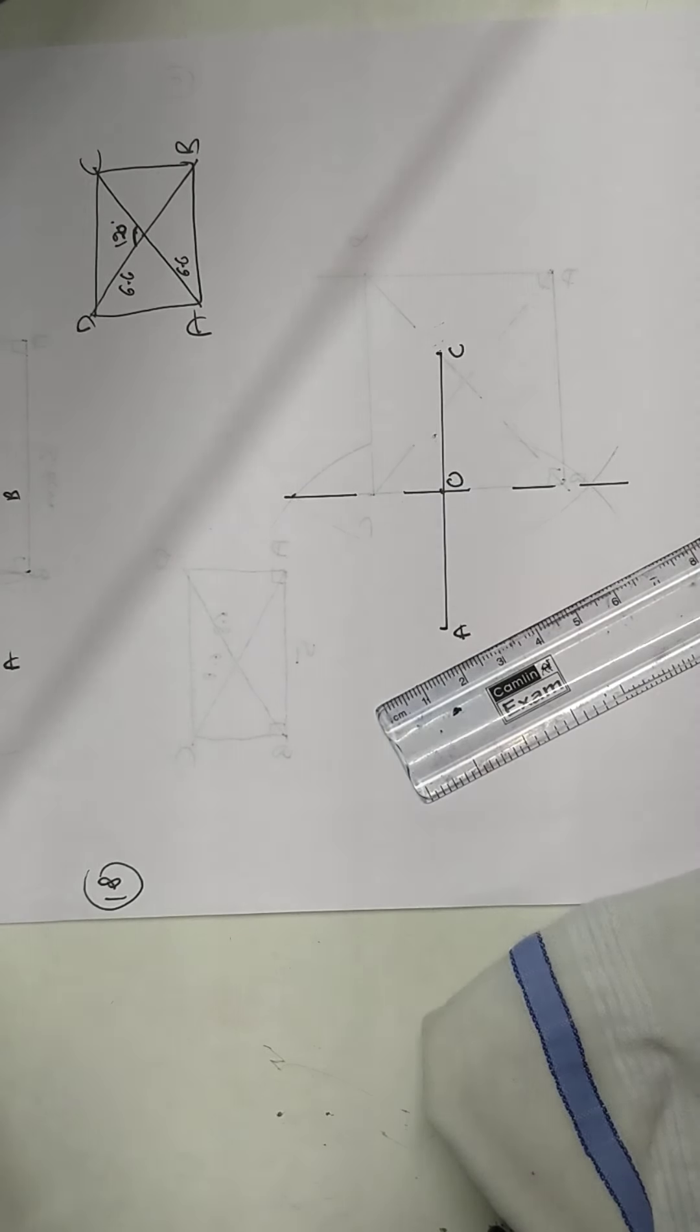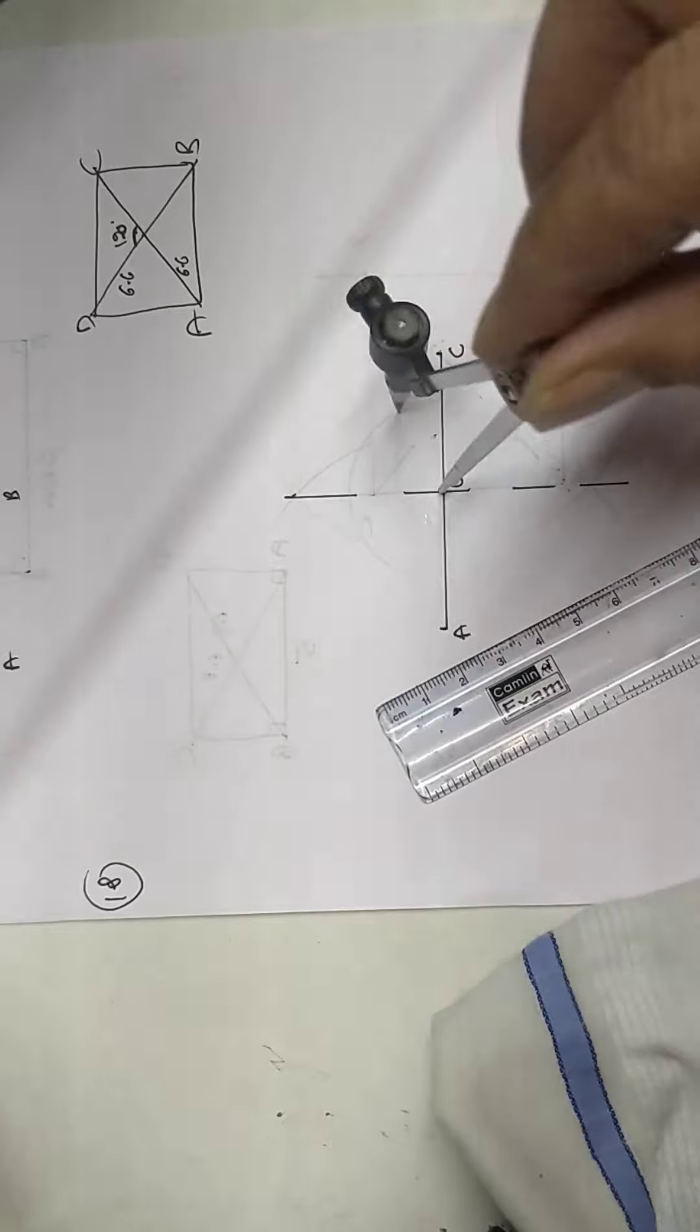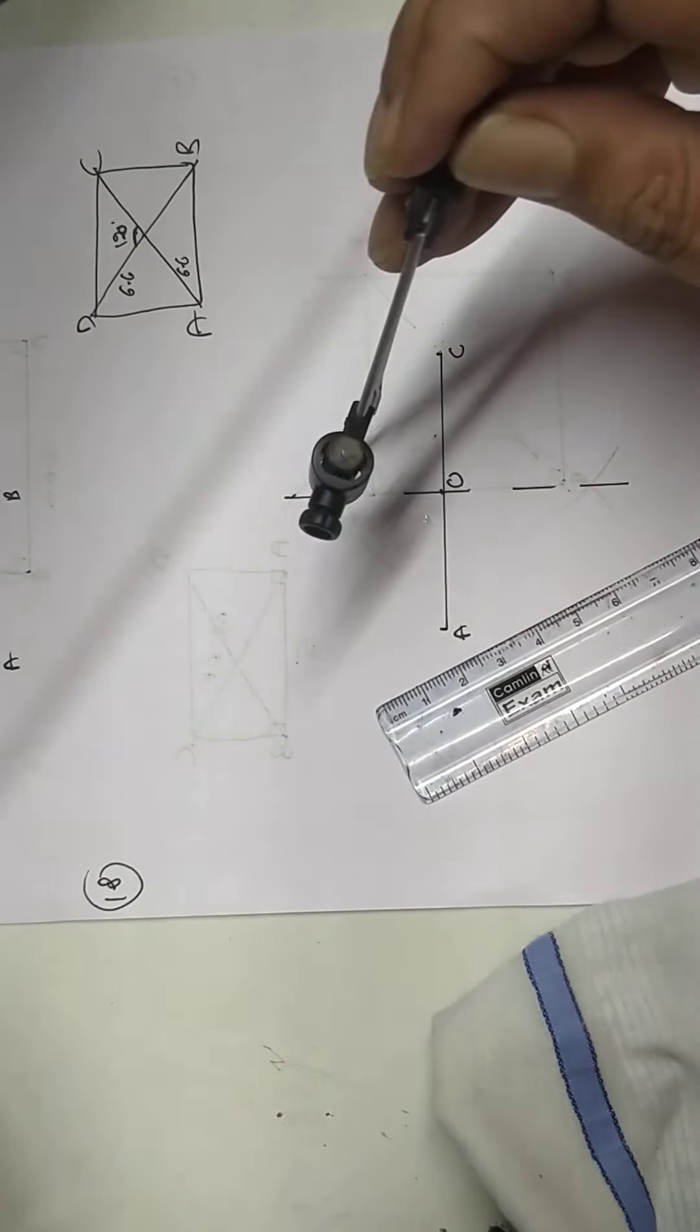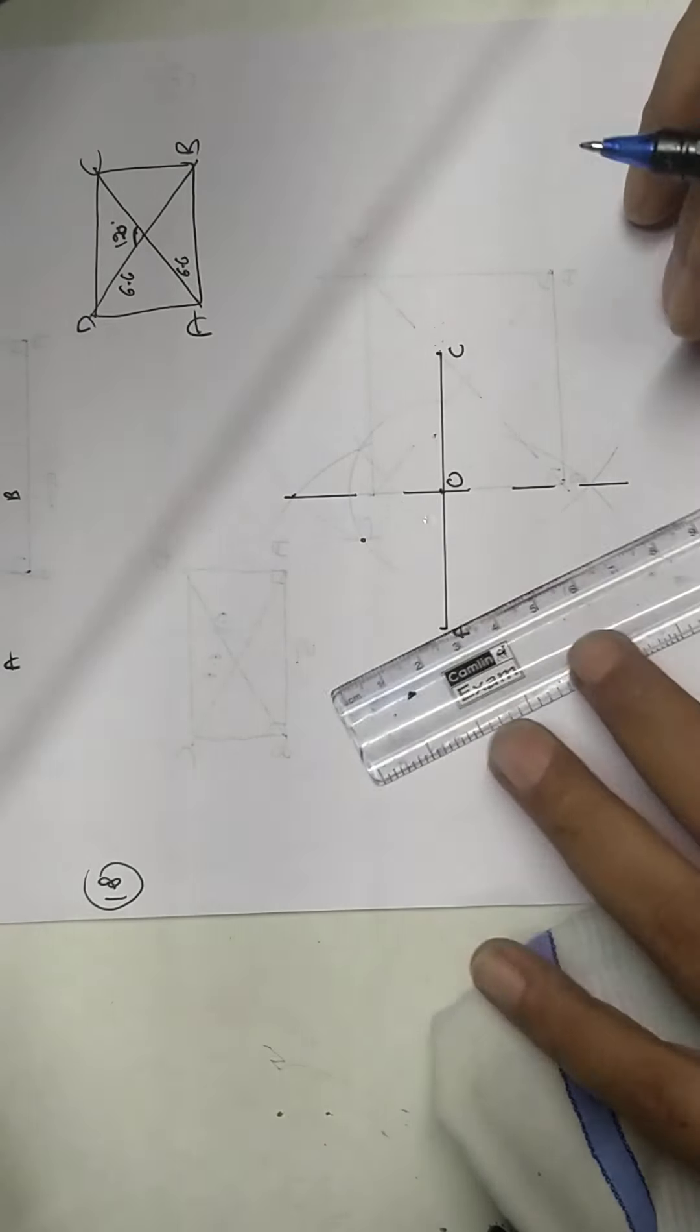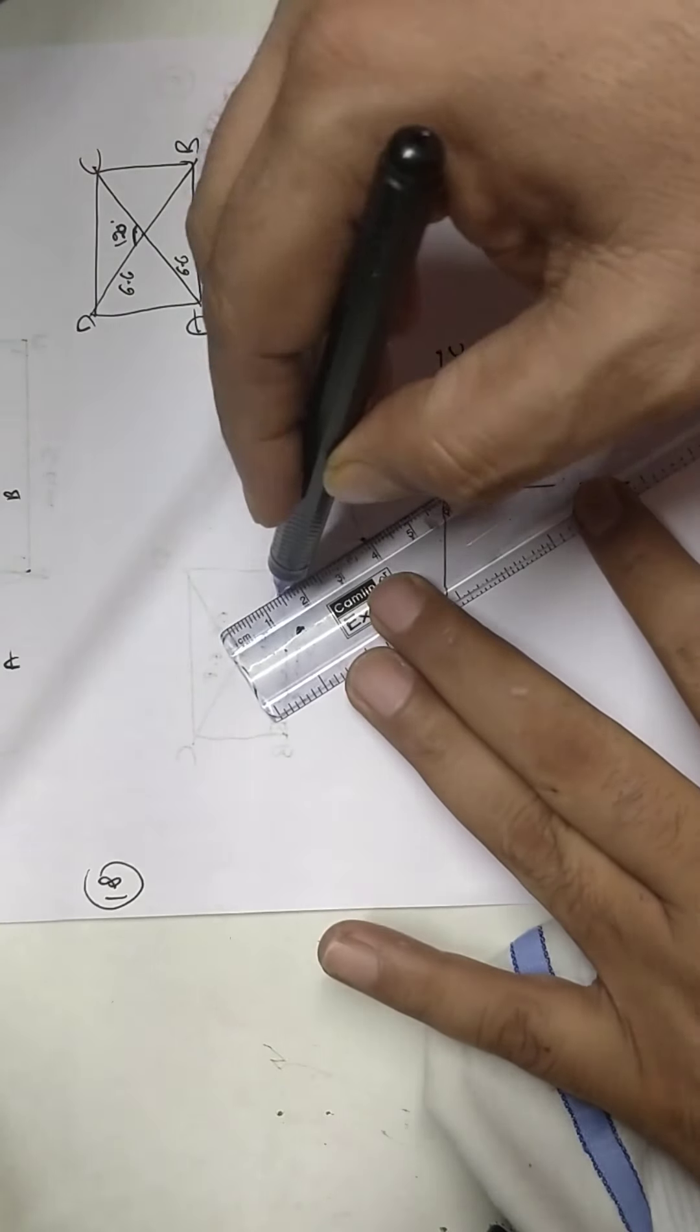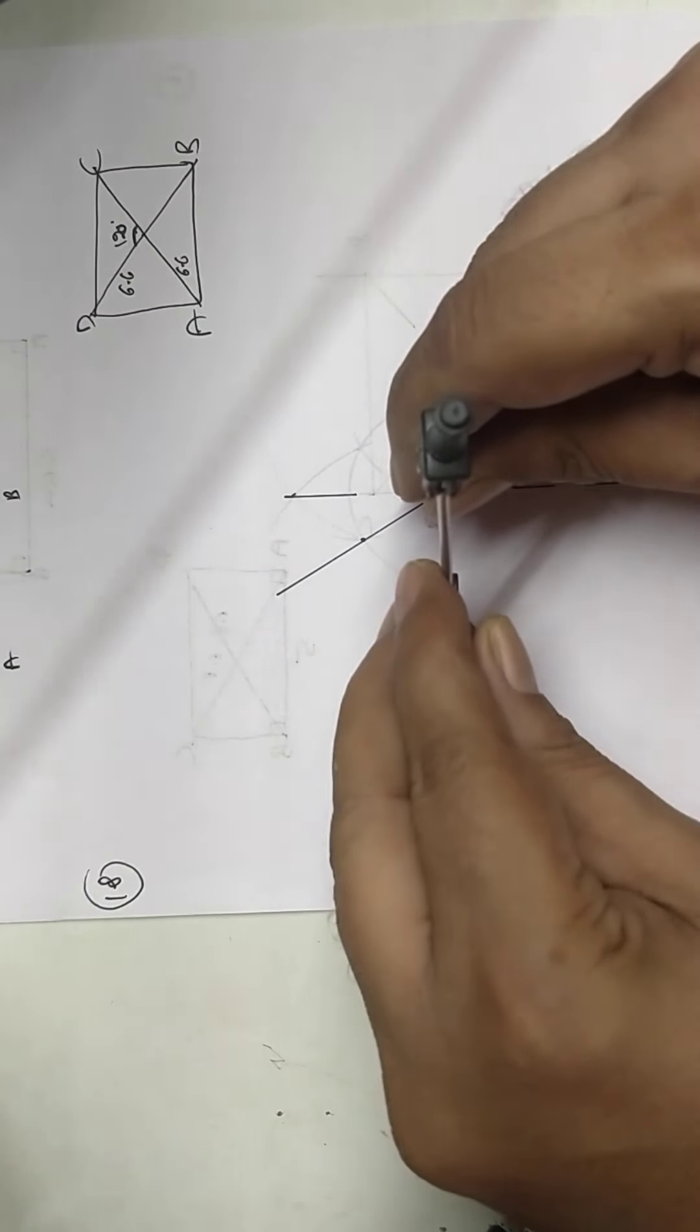Given that angle between diagonal is 120. So draw 120° at O. Take from here. 60. 120. This is my angle. Join this. You know diagonals are equal. They bisect each other.